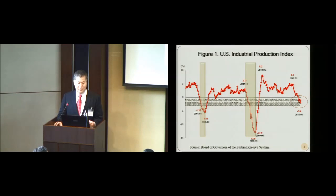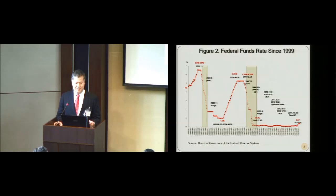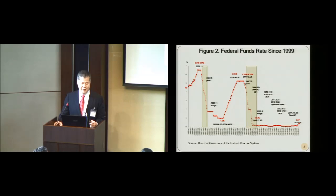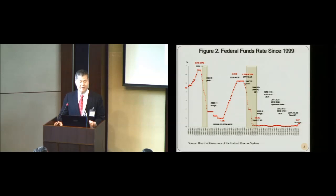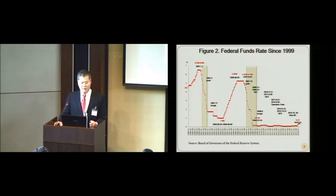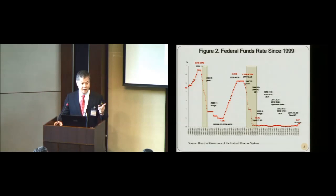To react to these recessions, the Fed reacted quite promptly. We can see from figure two that before the peak of 2001, the Fed lowered the federal funds rate from 6.5% to 6.0% on January 3rd, 2001 — two months before the peak. And after that, steadily decreased the federal funds rate. On June 25th, 2003, the federal funds rate was only 1.0% and was maintained at that level for about one year, and after that steadily increased.